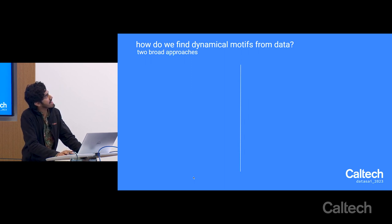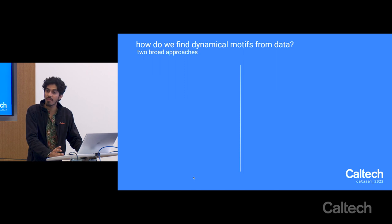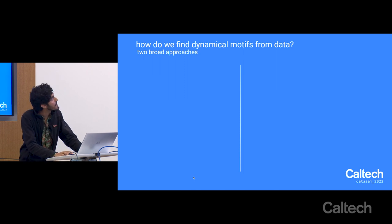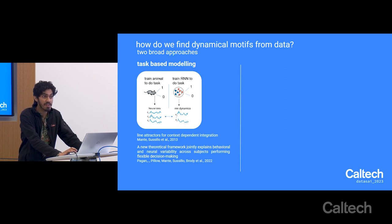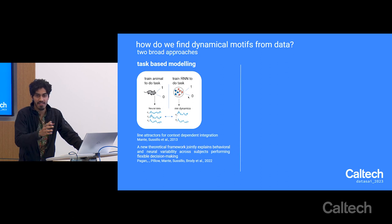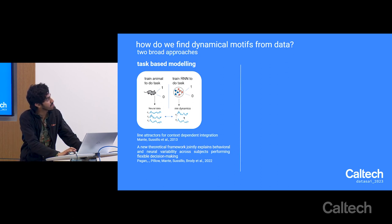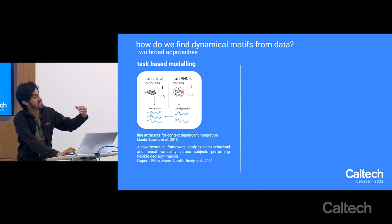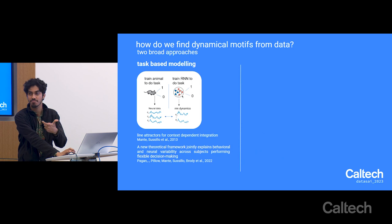How do we start identifying these motifs? One method is task-based modeling: you have an animal doing a task, record data from the animal, and have an RNN that does the same task, then look at the equivalence between the RNN and neural data. This is exactly what was done in Mante and Sussillo's paper—they did not fit a dynamical system to the neural data, but rather modeled the dynamical system to replicate the behavior. That's the task-based modeling approach.